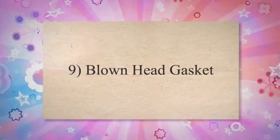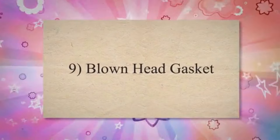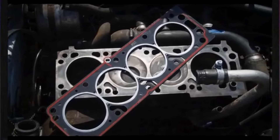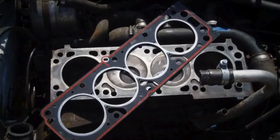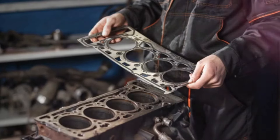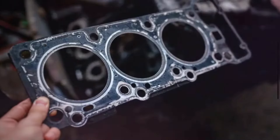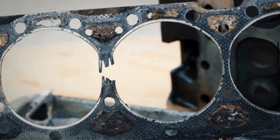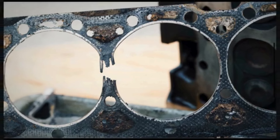9. Blown head gasket. The head gasket seals the joint between the engine block and the cylinder head. It helps maintain proper compression within the cylinders and prevents coolant and oil from mixing. When a head gasket is compromised, it can lead to misfires.